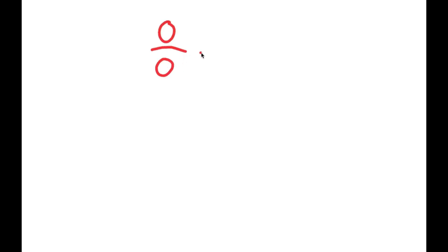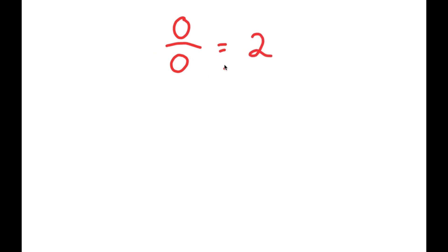All right, so in this video, I'm going to be proving that 0 divided by 0 is equal to 2. So, how am I going to prove this? Well, let's first start by writing out 0 over 0.